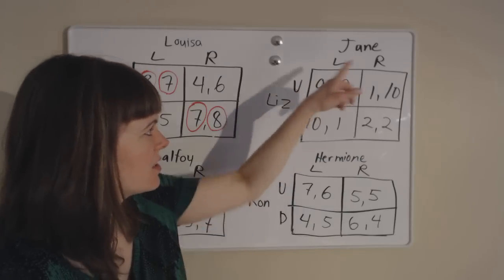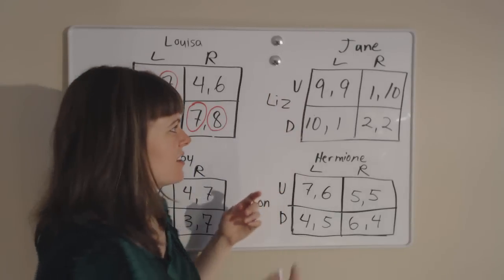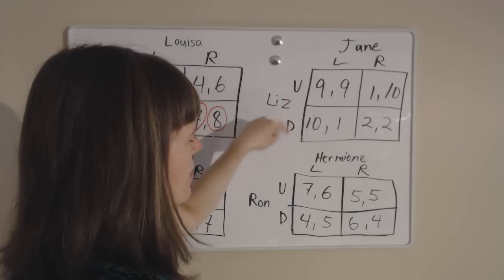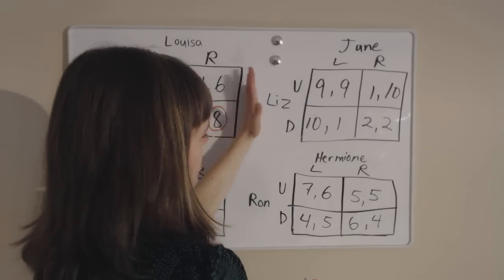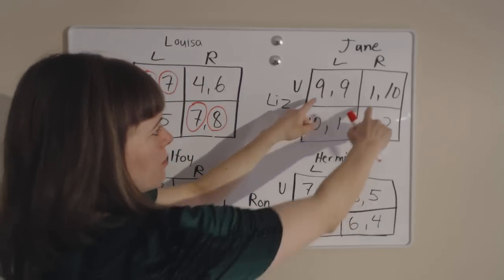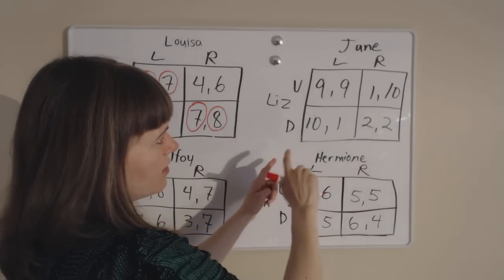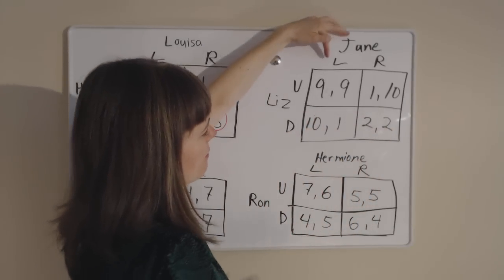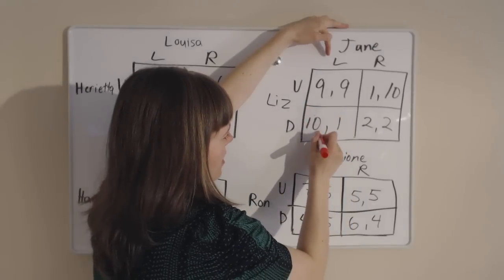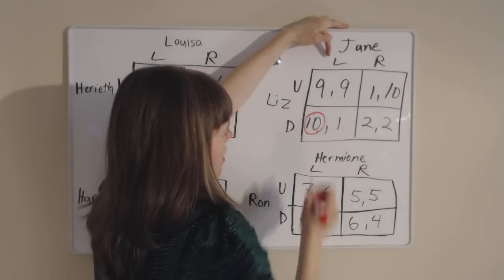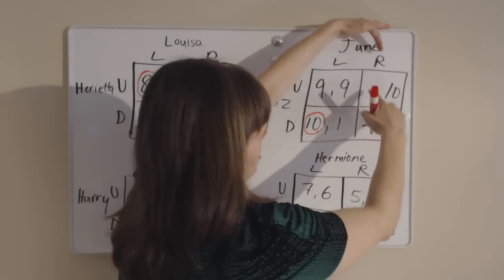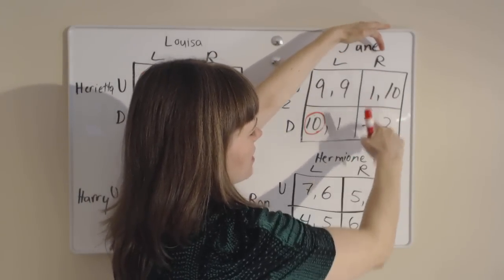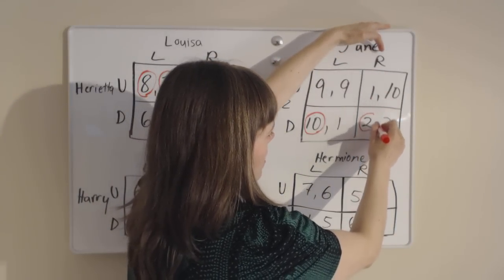Now let's look at Liz and Jane from Pride and Prejudice. All these players have the same strategies: up and down, left and right. We'll start from Liz's perspective — player 1 — and check Liz's best response to each of Jane's strategies. If Jane goes left, Liz likes the 10 over the 9. If Jane goes right, Liz likes the 2 over the 1.